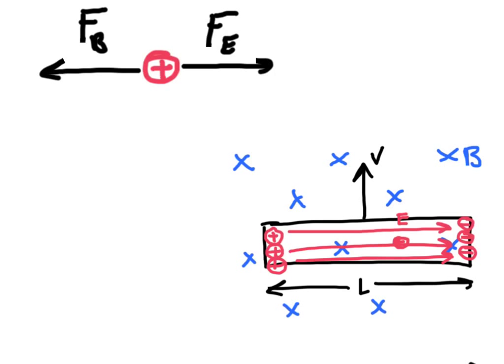So charges are going to separate until the following condition is true, in which the Lorentz force, which if everything is at right angles to each other, we can say that this force is Q times V times the magnitude of the B field. And this, on the right, is the force of the E field, which is just the charge times the strength of the E field. So this is going to keep happening until this condition is true.